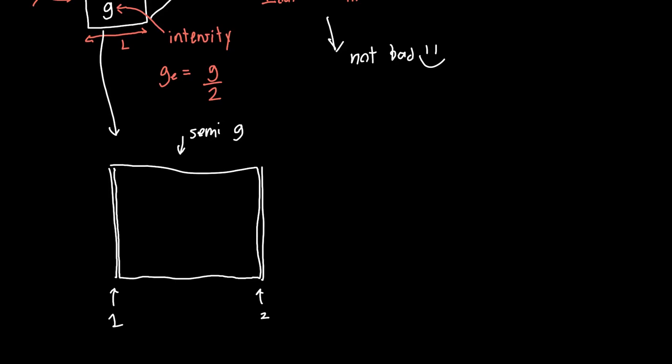Now what happens when we send in an electric field E_in? Well if we send it at a mirror, a certain amount of it is going to be reflected. Let's say that this is material zero, this is also material zero, and this is material one. This is probably air.